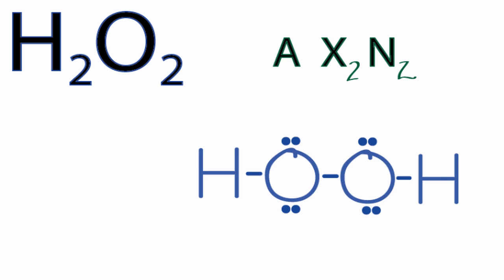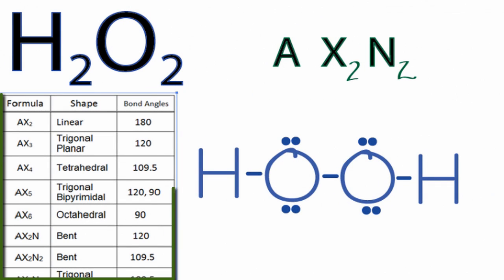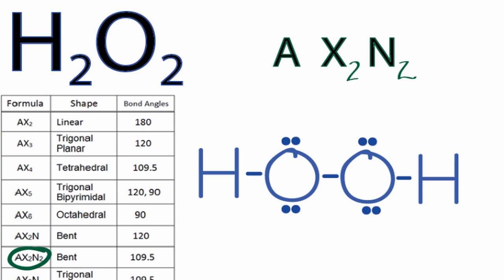We could have memorized that this is a bent geometry, or we can look it up on a table if that's available to us. So going down our table, we're looking for AX2N2. So AX3, AX2N, and here we go, AX2N2. This tells us that H2O2, with respect to that oxygen, has a bent molecular geometry and a bond angle of 109.5.